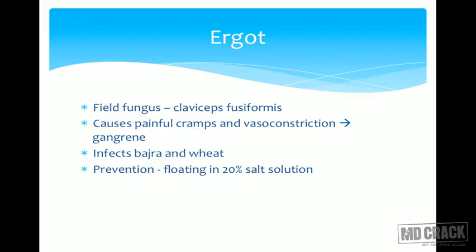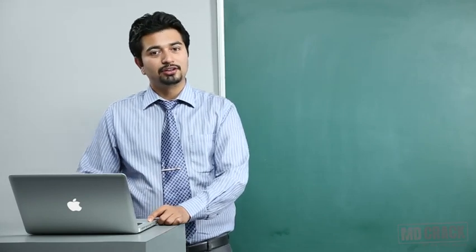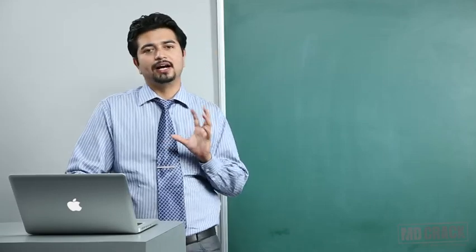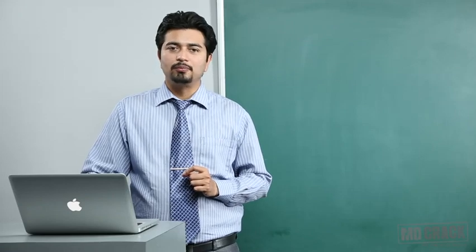Ergot poisoning — the field fungus Claviceps fusiformis secretes ergot, a very powerful vasoconstrictor. It causes painful cramps and severe vasoconstriction that may lead to gangrene. Claviceps fusiformis infects bajra and wheat. Prevention is done by floating the grains in 20% salt solution. These are high-yield points, so please try to remember the key details.